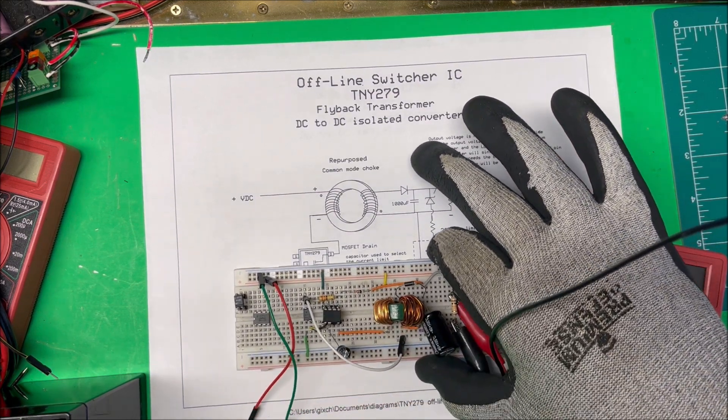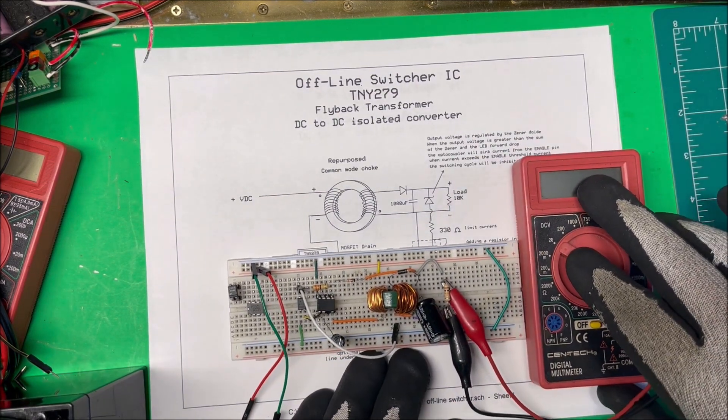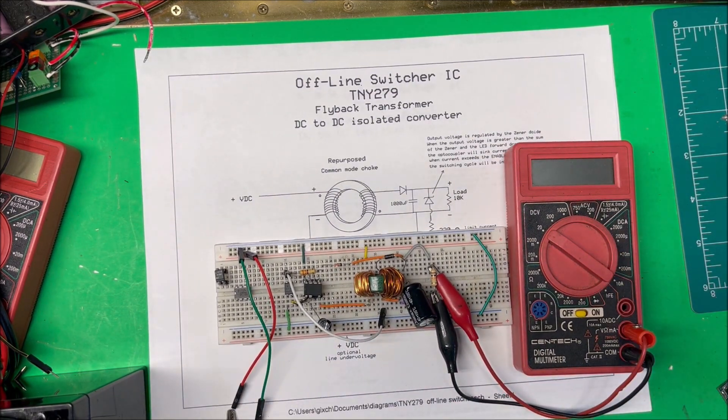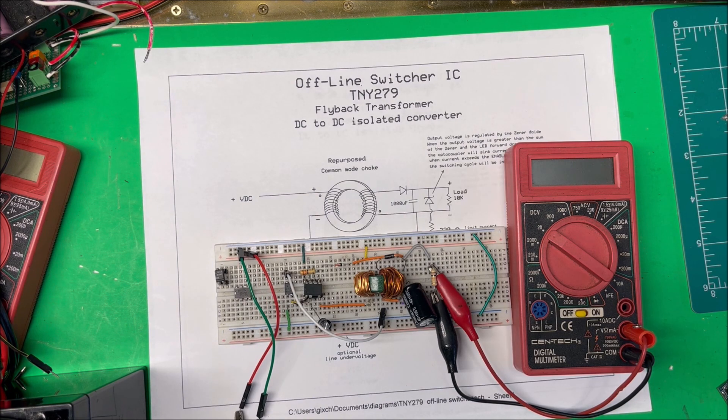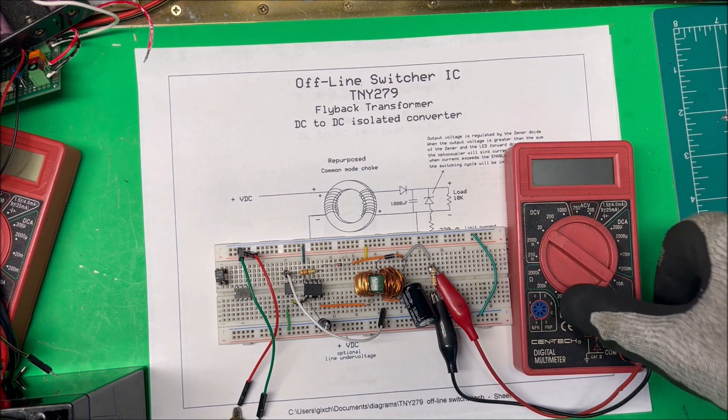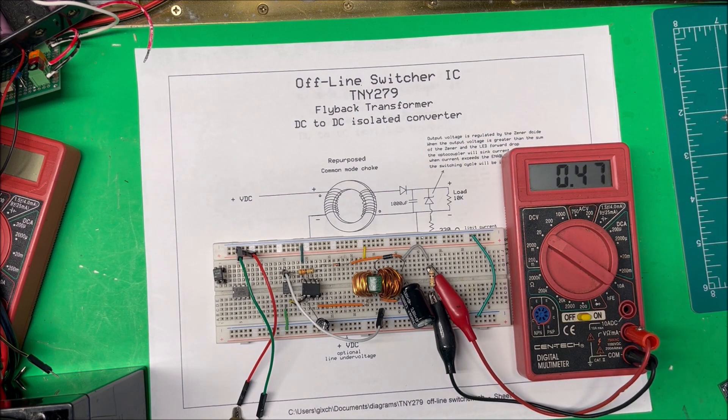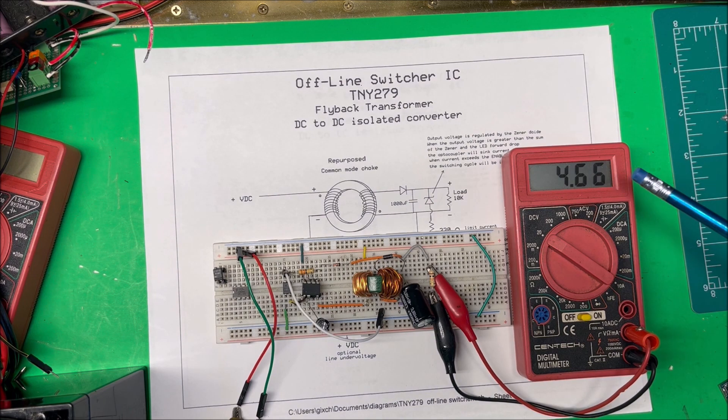We'll turn that on. We've got 4.656 volts coming out. The zener here, I think this is a 3.3 or 3.9 volt zener.